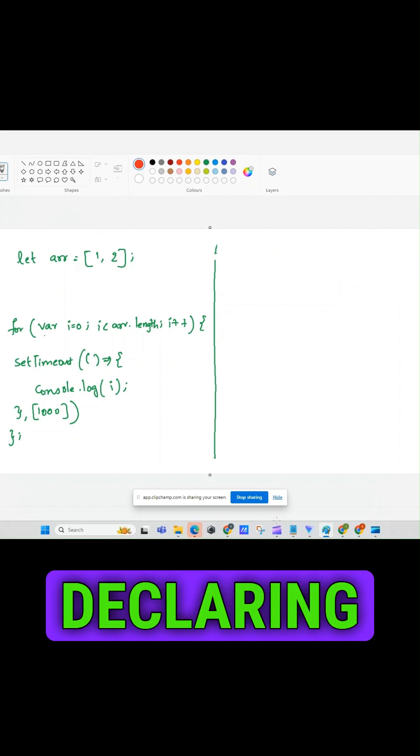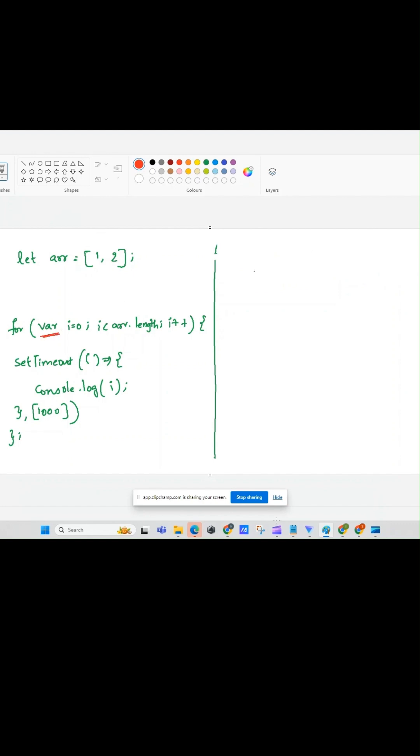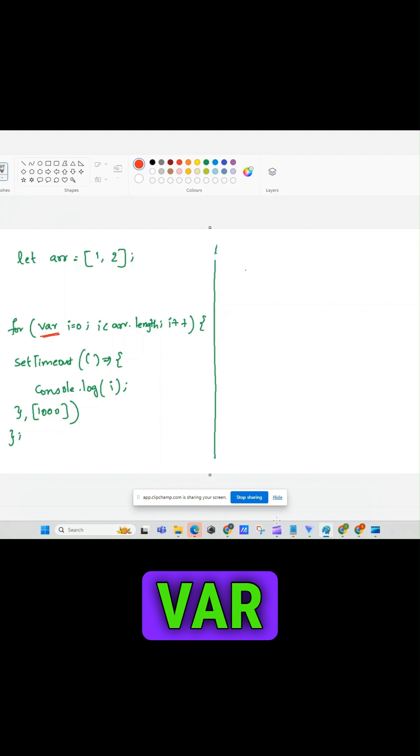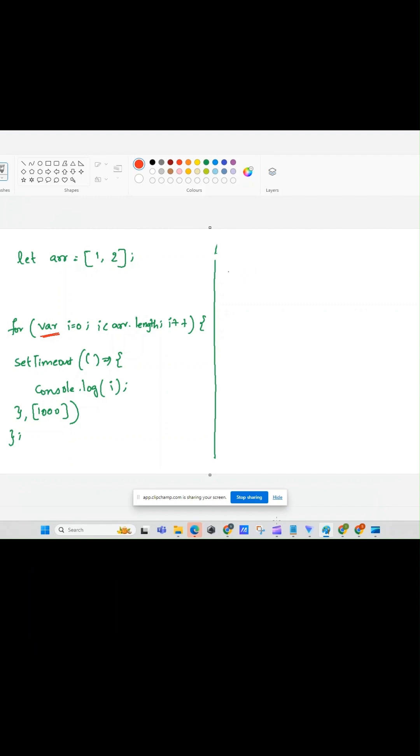You carefully observe here, we are declaring the variable by using var keyword. Whenever we declare a variable by using var keyword in JavaScript, JavaScript will move this particular variable to top of its scope, and it will be initialized with the value of 0.